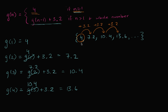Now we could have defined it that way — we could have said, let's have a sequence where the first term is four, and then we keep adding 3.2 to get each next term. But this is another interesting way of defining it as an algebraic function defined over all positive integers, where we have a base case that gives us our first term, and then another case defined in terms of the function that you have to recurse backwards to eventually get to the base case. We call this a recursive function.